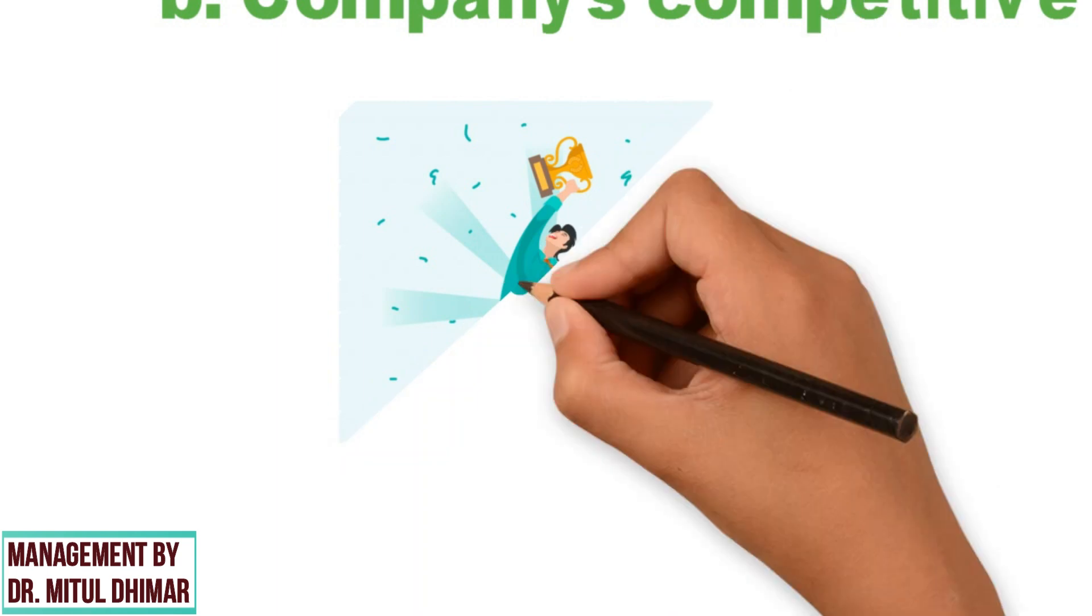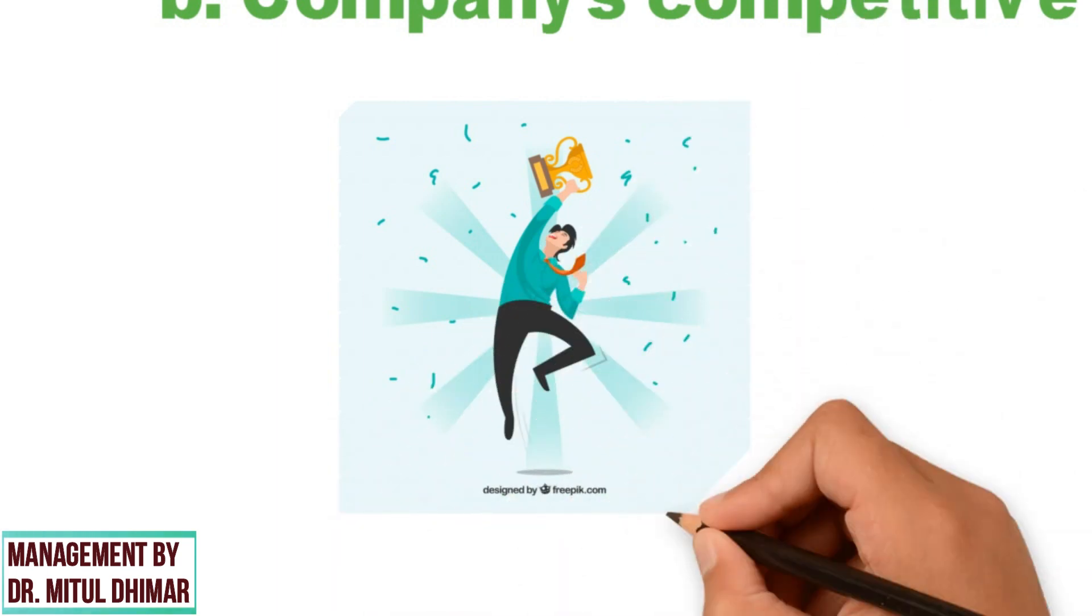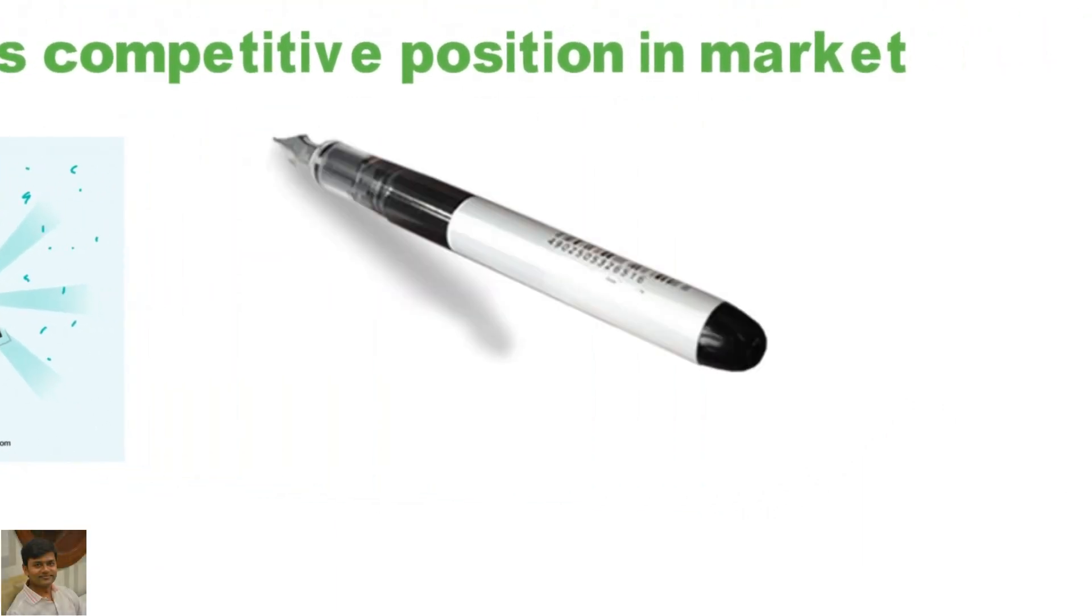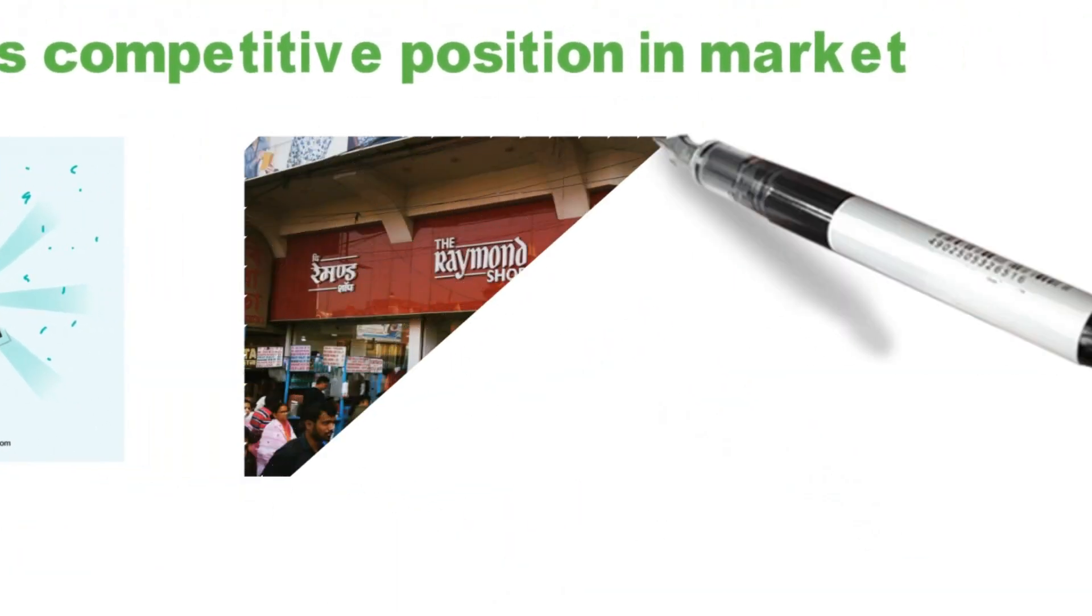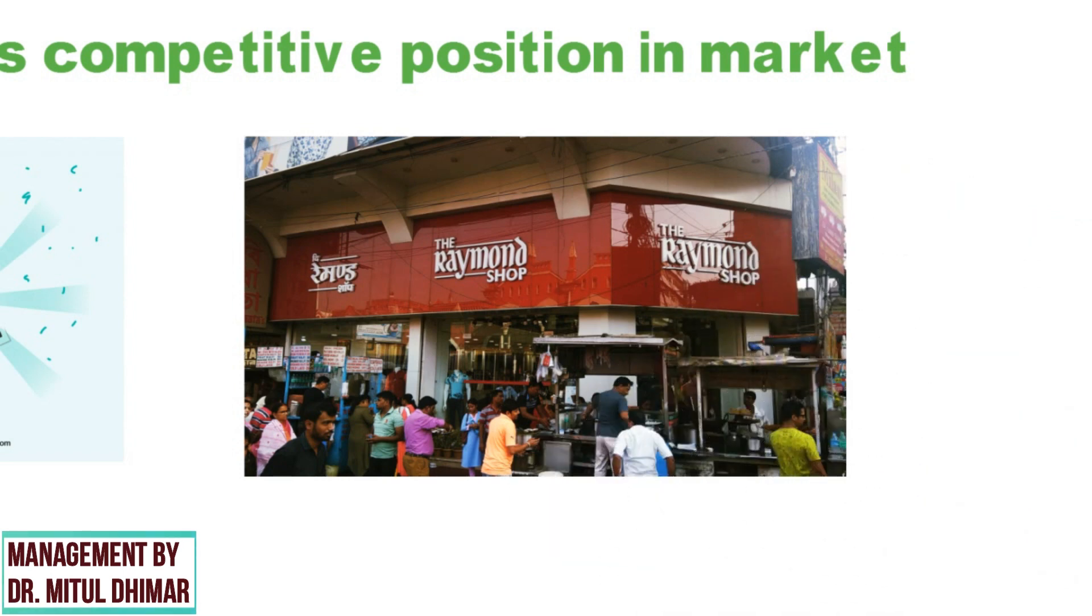Second factor is company's competitive position in market. A leading company can design its own distribution network. Company can select a specific distribution channel according to their requirements. For example, Raymond Group, an Indian textile major, has established many owned retail outlets.